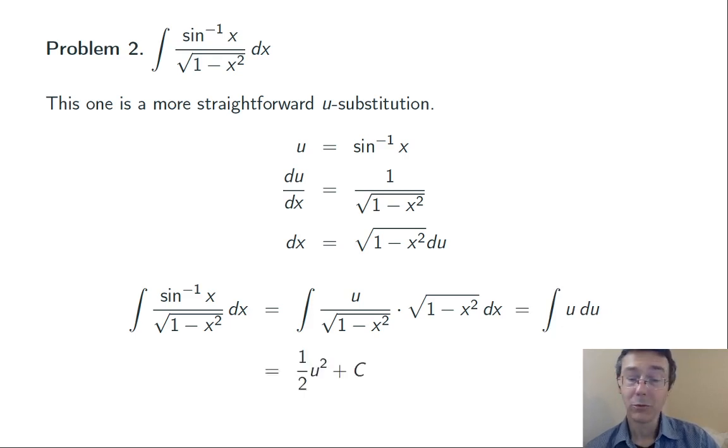Integrate it to get one-half u squared plus c. Take out the u, replace it with what it's equal to, sine inverse of x. We get one-half quantity sine inverse of x squared plus c.